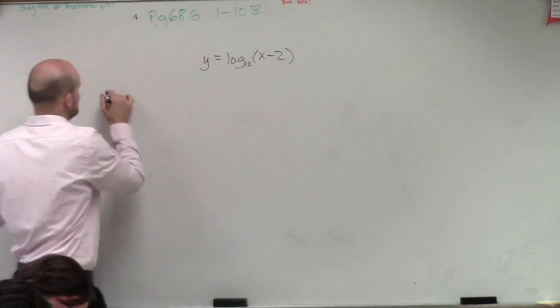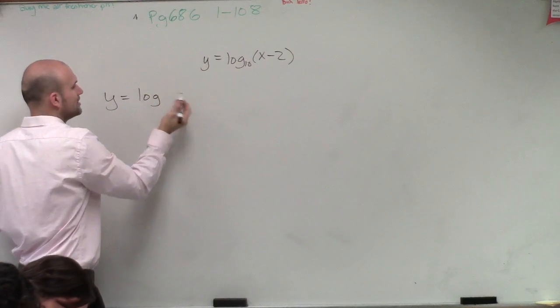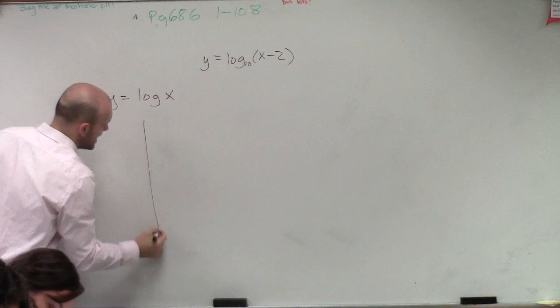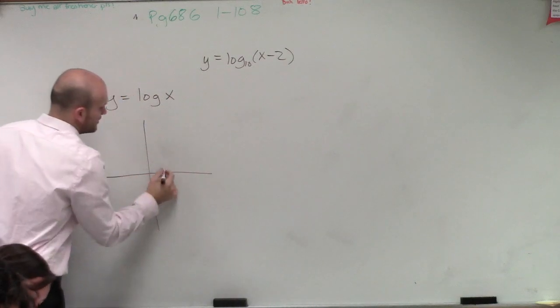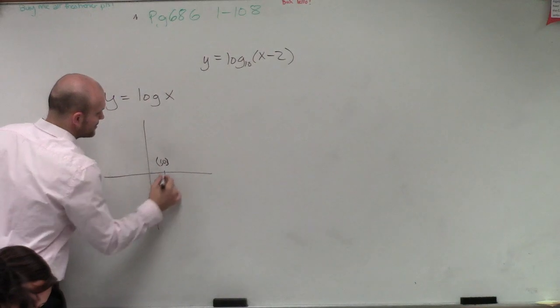So remember, we have a logarithmic function, y equals log of x. And pretty much that produced a graph that had a y-intercept at 1, 0. And the graph looks something like this.